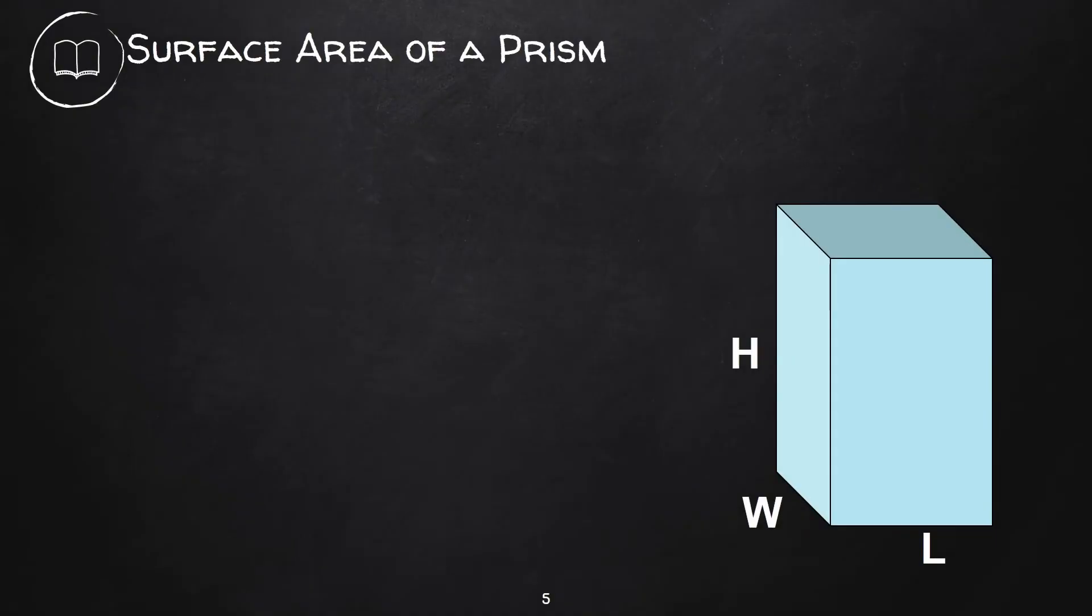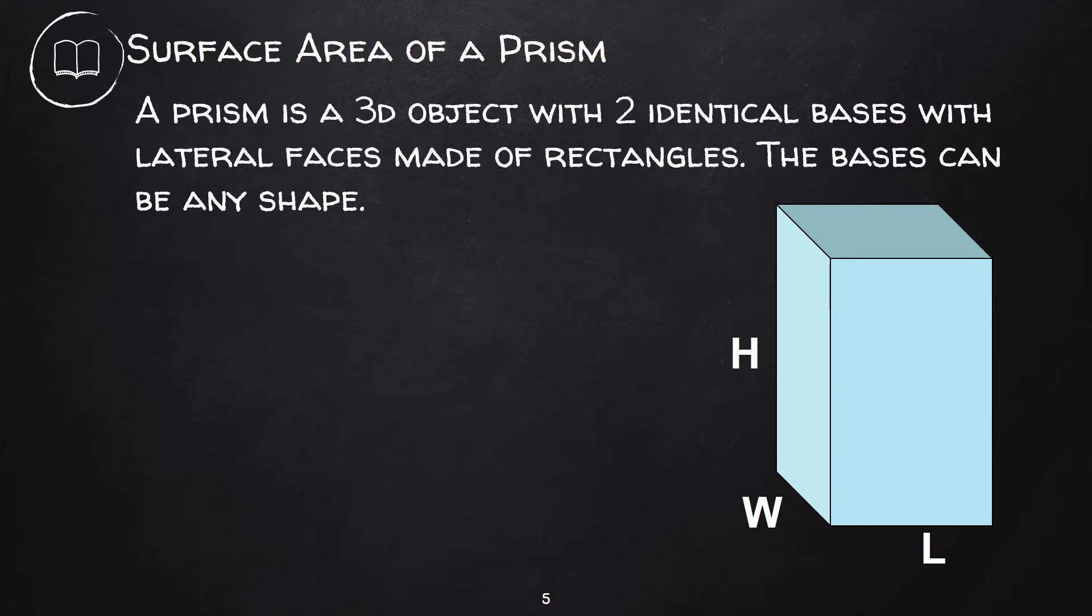This solid is called a rectangular prism. A prism is a 3D object with two identical bases with lateral faces made of rectangles. The bases can be any shape.